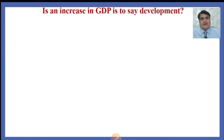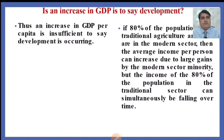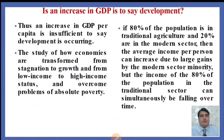Is an increase in GDP sufficient to say that a country has achieved economic development? An increase in GDP per capita is insufficient to say development is occurring. If 80% of the population is in traditional agriculture and 20% are in the modern sector, the average income per person can increase due to large gains by the modern sector minority, while the income of 80% in the traditional sector can simultaneously be falling. Economic development addresses how economies are transformed from stagnation to growth and from low income to high income, overcoming problems of absolute poverty.